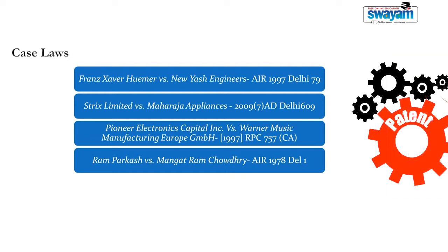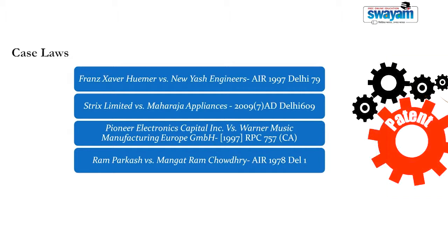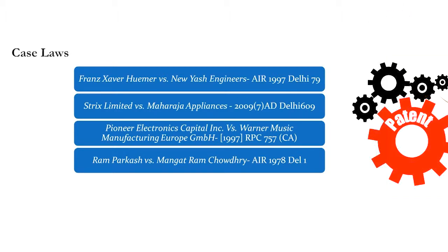One instance could be this: if a patent application was taken up for examination after the expiry of the term of the patent itself, would it be possible for a third party to challenge the examination and subsequent grant on the ground that — although there is no express provision under section 64 to challenge the validity of a patent on the basis that it was granted or examined after the expiry of its term — it could still invoke a writ petition to challenge the validity. This has happened in practice where the patent office has examined and granted patents after the expiry of their term. In such a situation, it cannot be anyone's case that merely because this is not a ground for revocation under section 64, the public must suffer the continued subsistence of that patent on the register.